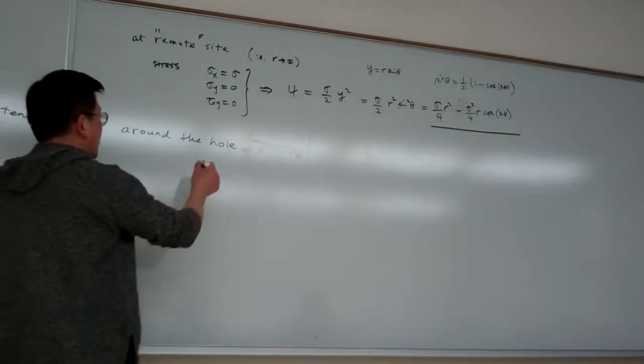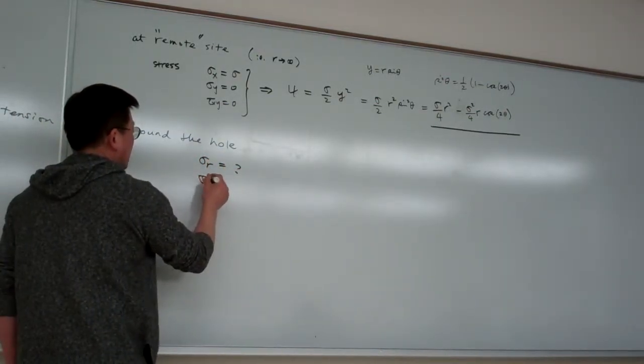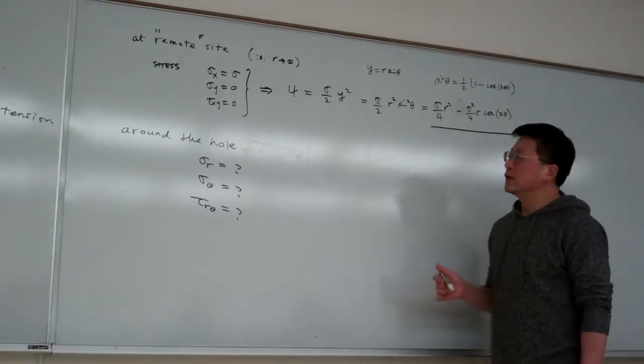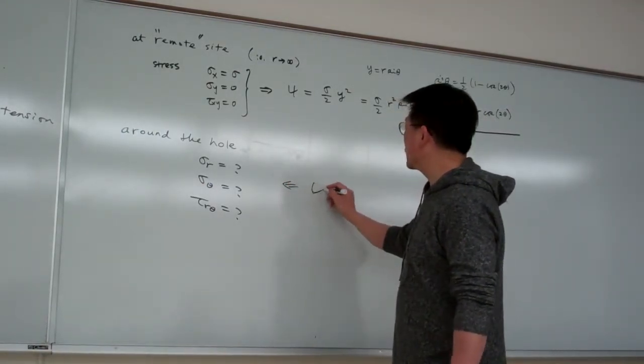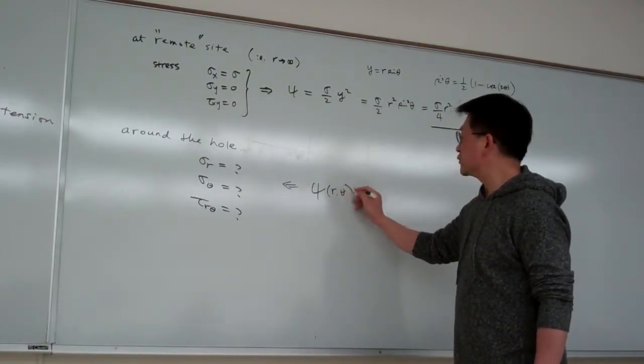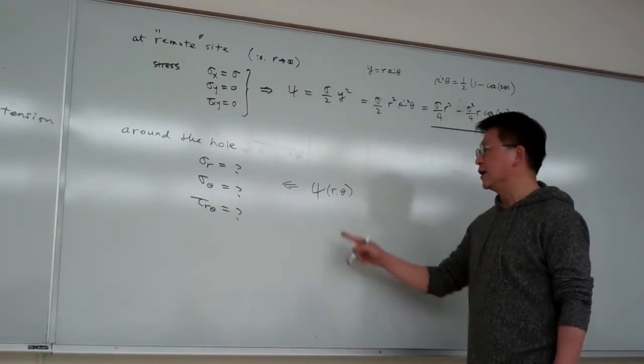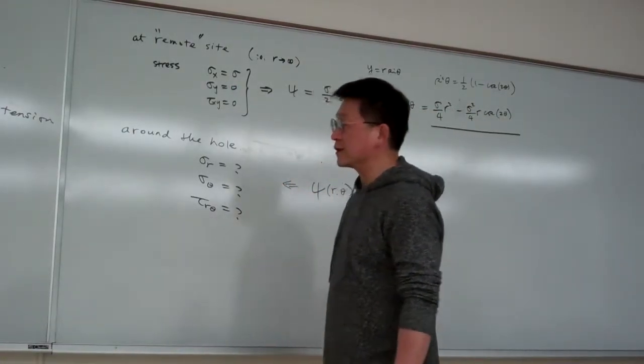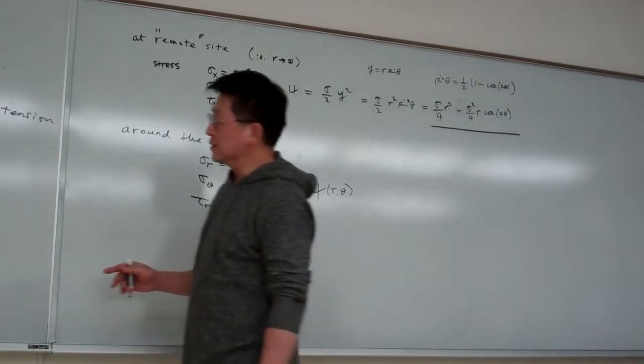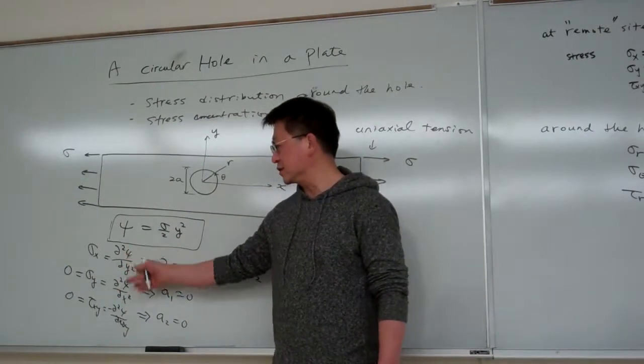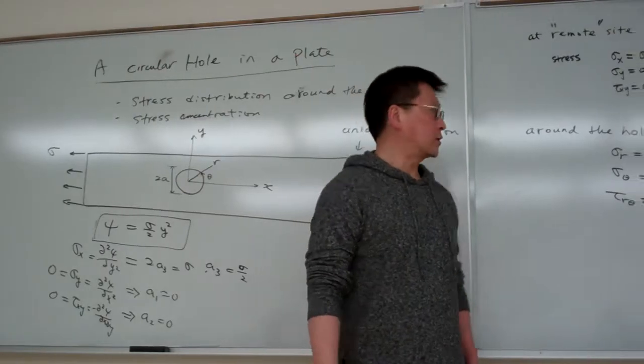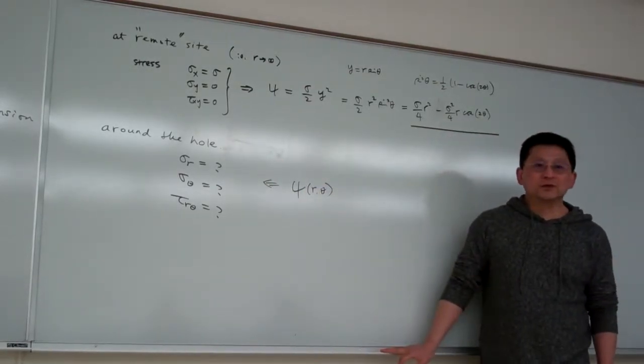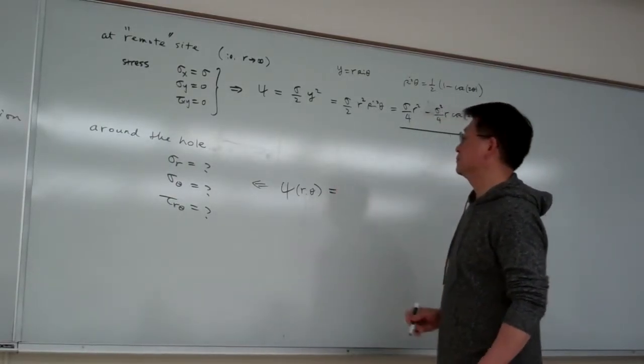So in terms of the polar coordinate system, this is the corresponding form of the Airy stress function. So based upon this one, then we begin to make a deduction. We try to deduce around the hole what's going on with sigma r and sigma theta and tau r theta. We're going to find, we're going to answer the question, what are these? To find this, as long as we can come up with a certain Airy stress function in terms of r theta, as long as we can figure out the form here, then are we able to calculate this one? Yes. The key is as long as we can find this one, then everything will be very straightforward. So now the key is how to find this one.